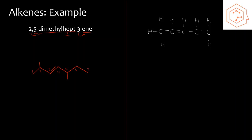For the second example, we have a naming exercise. The parent chain is five carbons long, so we use the prefix 'pent'. We identify two double bonds in the structure. Numbering from the right side gives the first double bond at carbon one, whereas starting from the left would give carbon two — so it makes more sense to start numbering from the right. We write in those numbers for clarity, and there are no substituent groups, so we can skip that step.